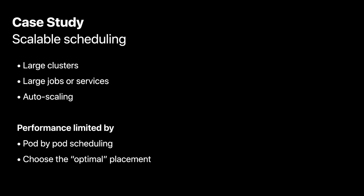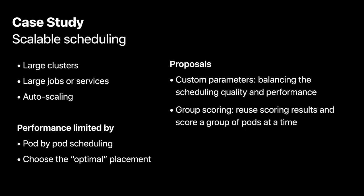The third use case is scalable scheduling — how to improve scheduler performance at scale. We have seen very large clusters with thousands to tens of thousands of nodes. Also, there are large jobs or services running in such clusters, each with thousands or tens of thousands of pods. For some real-time interactive workloads, auto-scaling is important to quickly scale the number of pods for a service to handle increasing workloads. Unfortunately, today's native Kubernetes scheduler performance can be limited by its pod-by-pod scheduling algorithm and the optimal placement strategy in very large scale clusters. To address that, we have made two proposals.